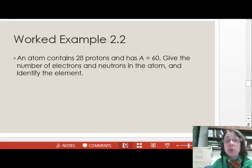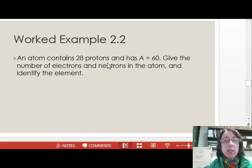Let's look at worked example 2.2. An atom contains 28 protons and has capital A equal to 60. Give the number of electrons and neutrons in the atom and identify the element. Pause the video to complete this problem.